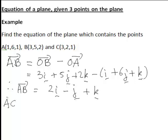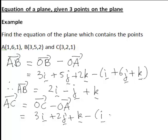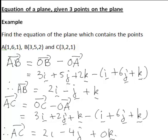Similarly finding the vector AC which also lies on the plane, that will be OC minus OA which is going to give us 3i plus 2j plus k minus i plus 6j plus k. Working that out we find that AC is equal to 2i minus 4j plus 0k.